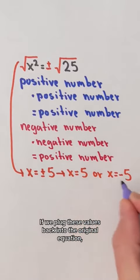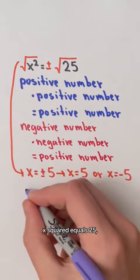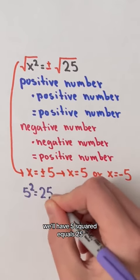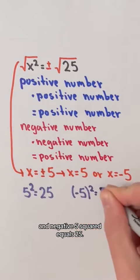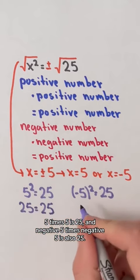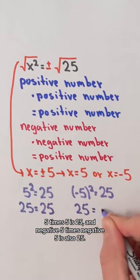If we plug these values back into the original equation, x squared equals 25, we will have 5 squared equals 25 and negative 5 squared equals 25. 5 times 5 is 25, and negative 5 times negative 5 is also 25.